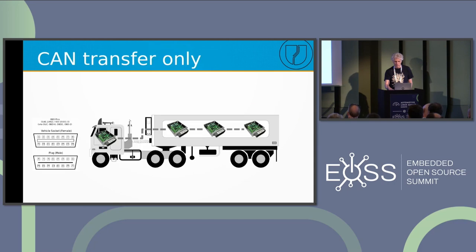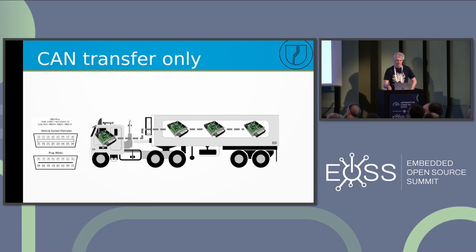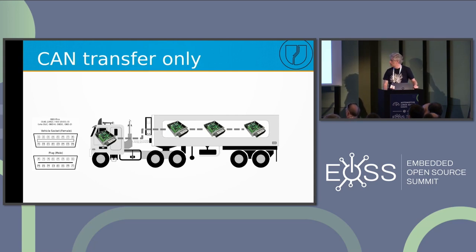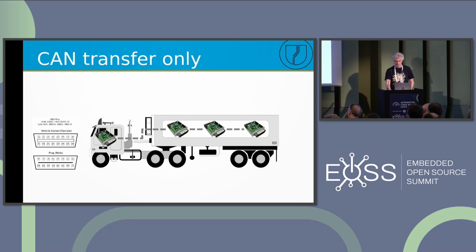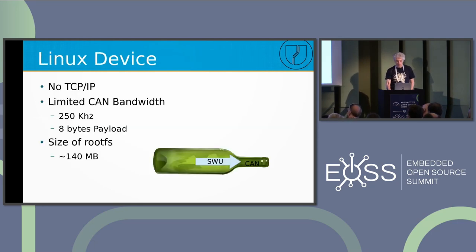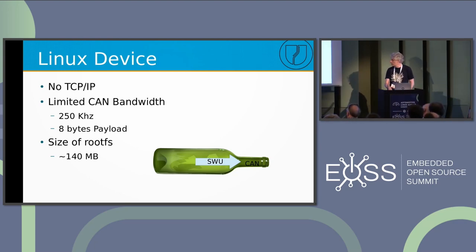The big difference is what I want to show from my short experience in this project. I had to update an embedded Linux device that was part of a truck — it was an ECU — and the only connection available is the CAN bus. You can access the device via OBD2, but at the end the ECU is connected just via CAN bus. So I have no TCP/IP. The most problematic issue is the CAN bus bandwidth: just 250 kilobits per second and an 8-byte payload.